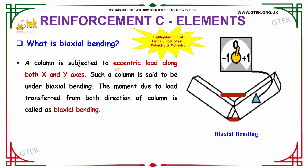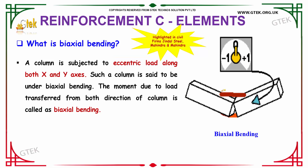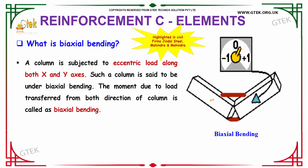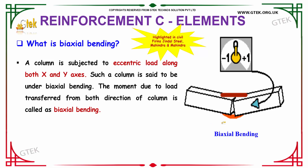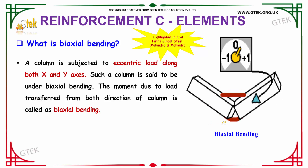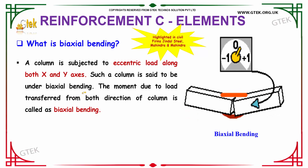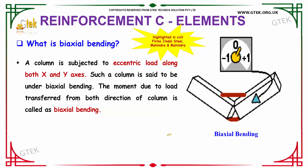When a column carries an eccentric load along both the x and y axes, such a column is said to undergo biaxial bending. The moment due to load is transferred from both directions of the column, and it is called biaxial bending.